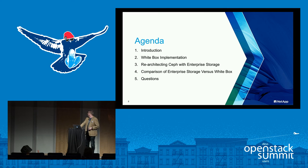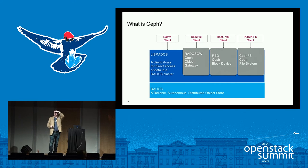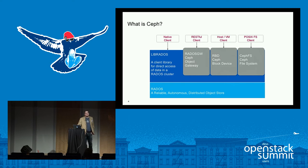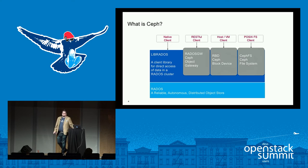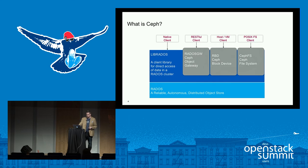What is Ceph? Generally, the core value props tend to come from the fact that it is a unified software-defined storage platform. In production today we have the ability to run block workloads as well as object workloads, and you have the ability to scale almost infinitely by adding more nodes as needed, so you don't have capacity limitations. File is in the works — it's been in tech preview for over a year but isn't fully supported yet. It's really about having on-demand capacity scale with the right IO interface for your workload.